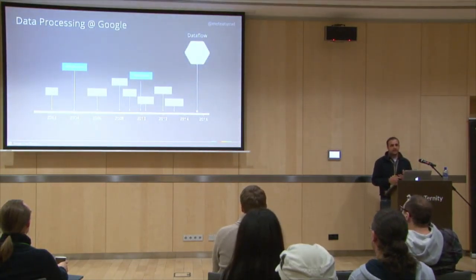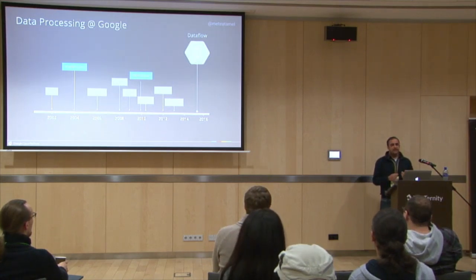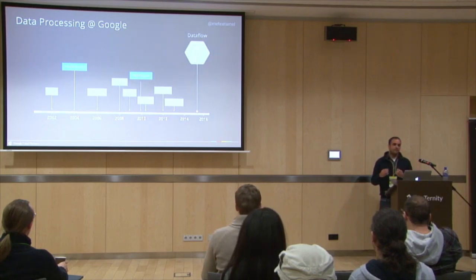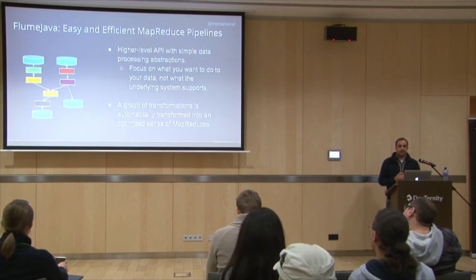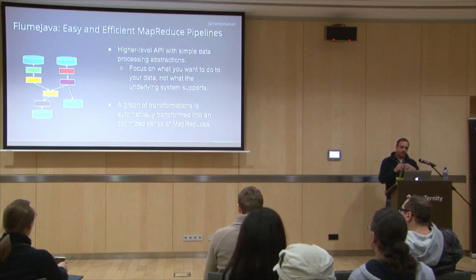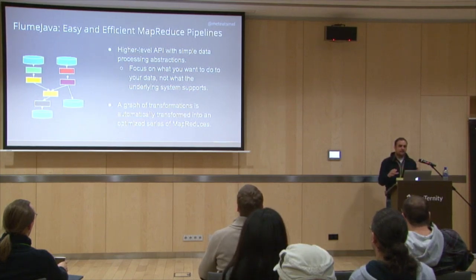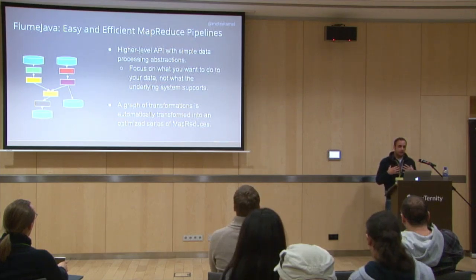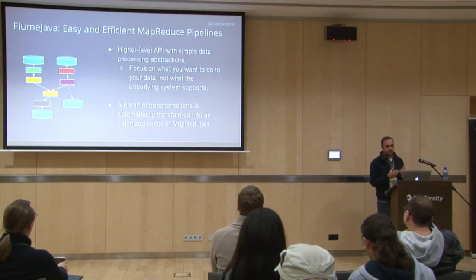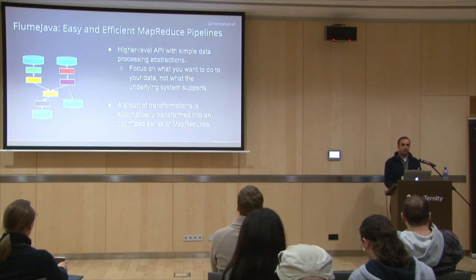The good thing about MapReduce is it's very easy to understand and applies to a lot of problems. But in many cases, doing a single map and a single reduce is not enough — you usually do a chain of maps and reduces, building a pipeline that feeds into each other. Because of that, we had something called Flume Java that came along around 2010. The main idea of Flume Java is that it's a high-level API where you define your pipeline using high-level constructs, and under the covers there is Map and Reduce — optimized Map and Reduce.